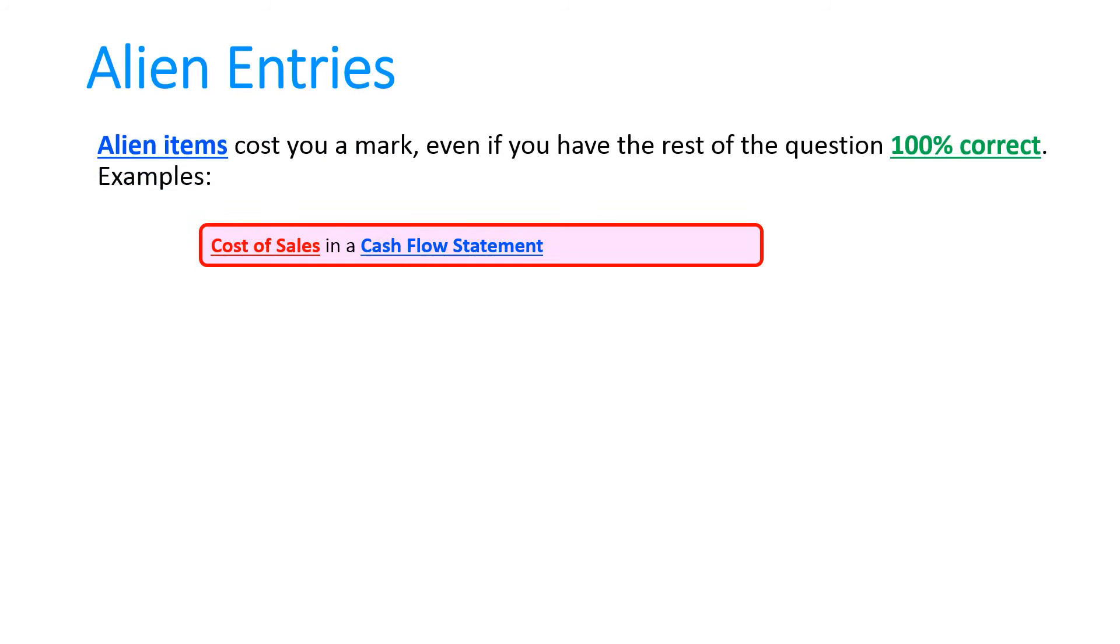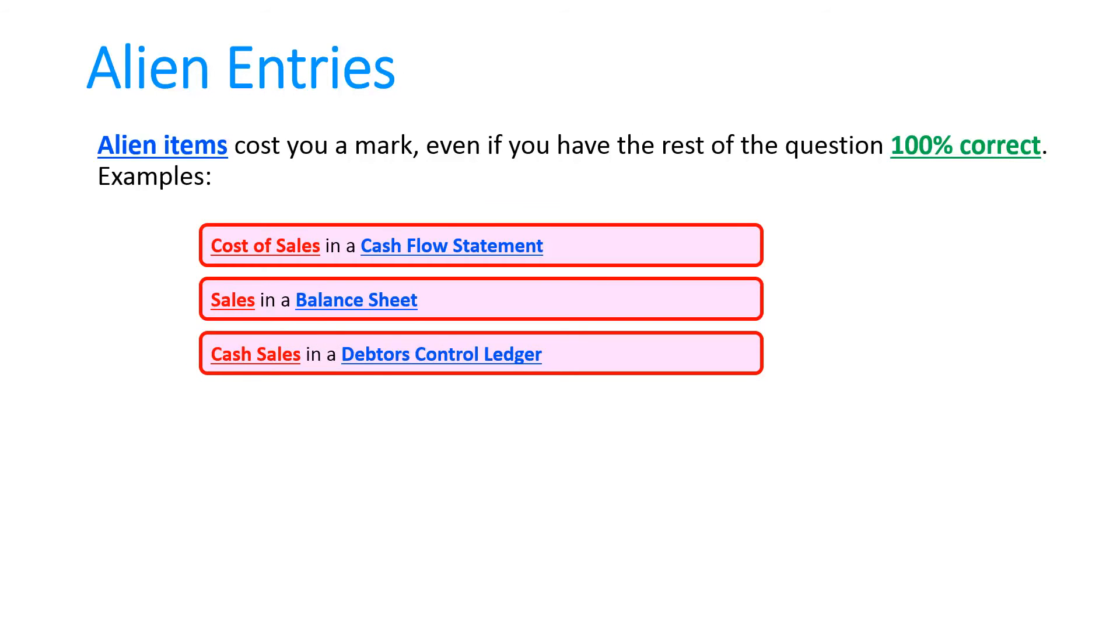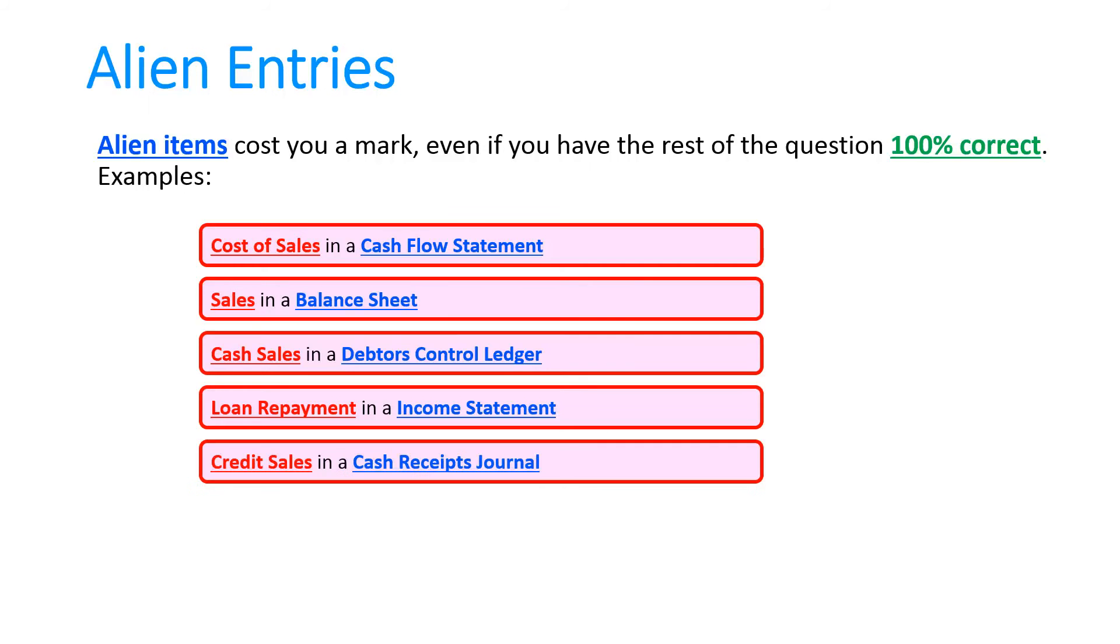Some common examples would be if you put cost of sales in a cash flow statement—cost of sales aren't an outflow of cash. You put sales in the balance sheet—they're a revenue which goes in the income statement. You put cash sales in the debtors control ledger—obviously only credit sales goes in there. You put loan repayments in the income statement—loan repayments won't be an expense. You put credit sales in a cash receipts journal—that's incorrect, you should only put the receipts from debtors after the credit sale.